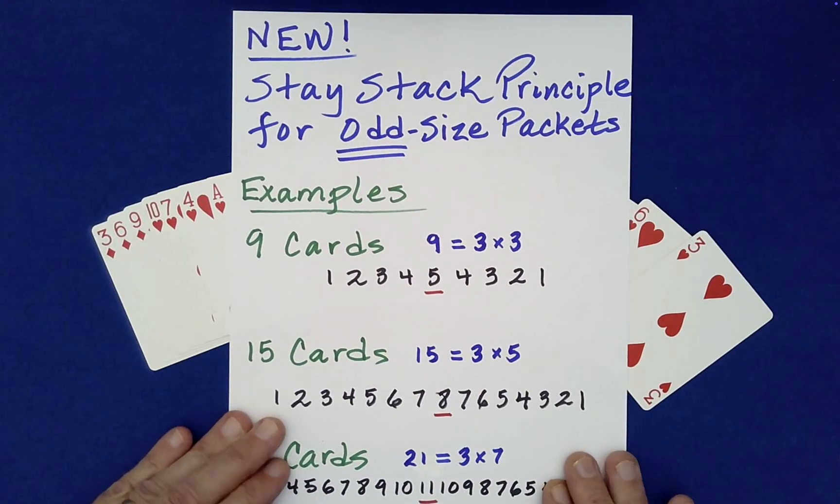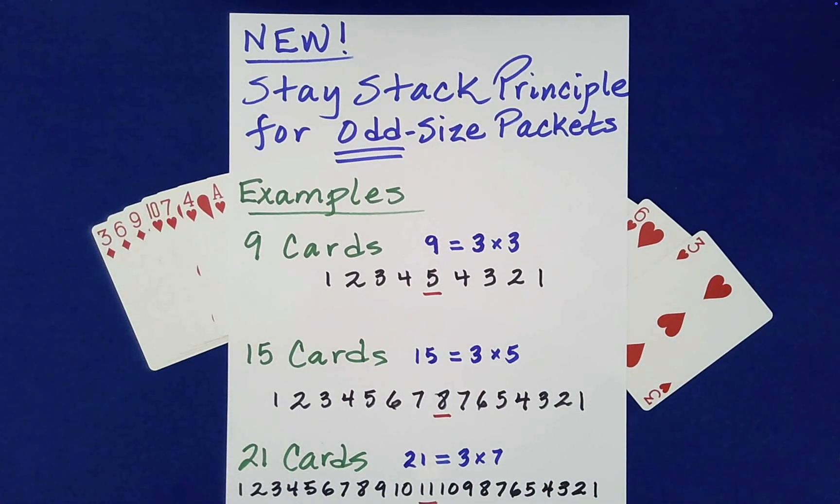So I personally think that this is a really big deal because if you have any sense of how many card effects use the standard stay stack principle, you'll realize if there's now one for odd size packets that opens up an entire universe of new card effects that can now be designed, taking advantage of this stay stack principle for odd size packets. So thank you for watching and take a look at other videos on the absolute math magic channel.